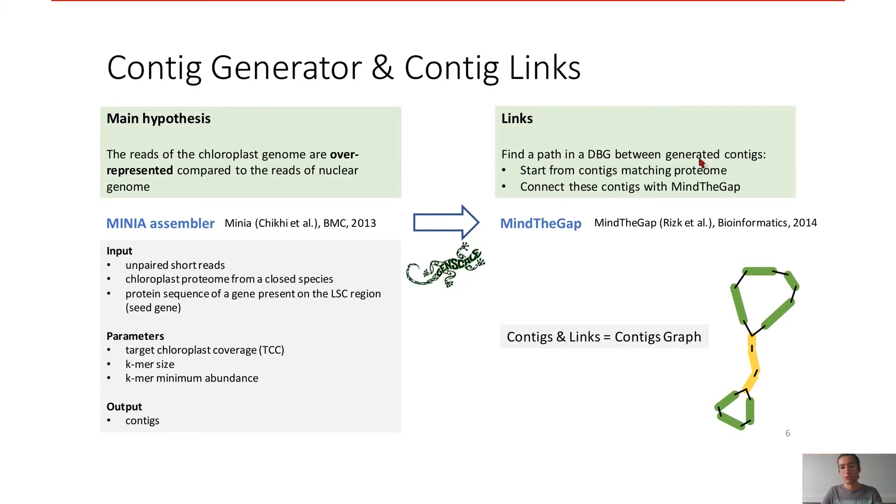Then we want to generate links between all these generated contigs. For that purpose, we used Minimap2. Both Minia and Minimap2 were developed at the GenScale teams. With contigs and their links, we built a contig graph.